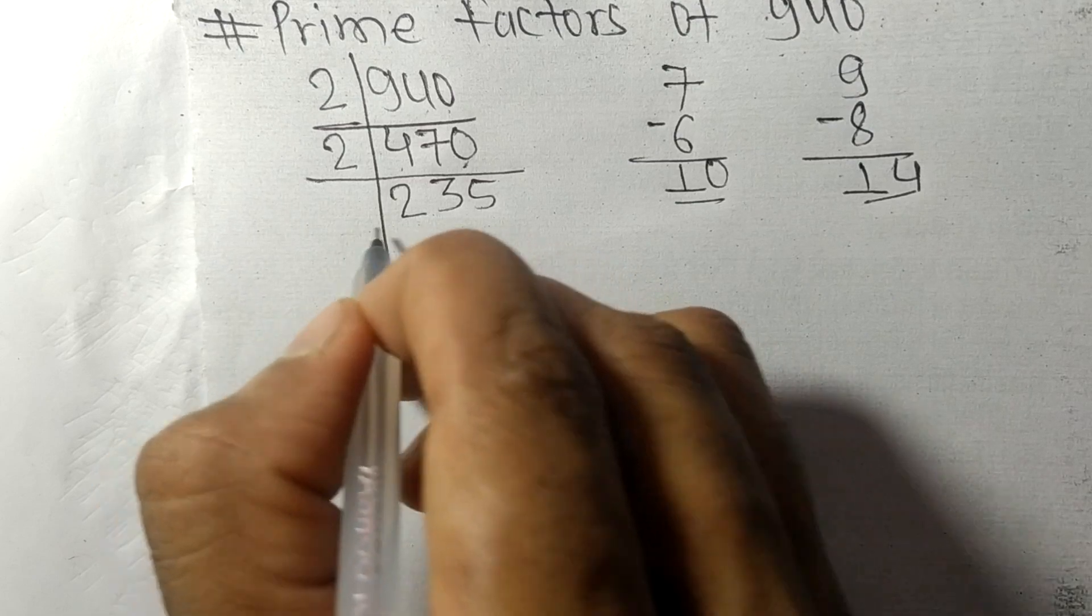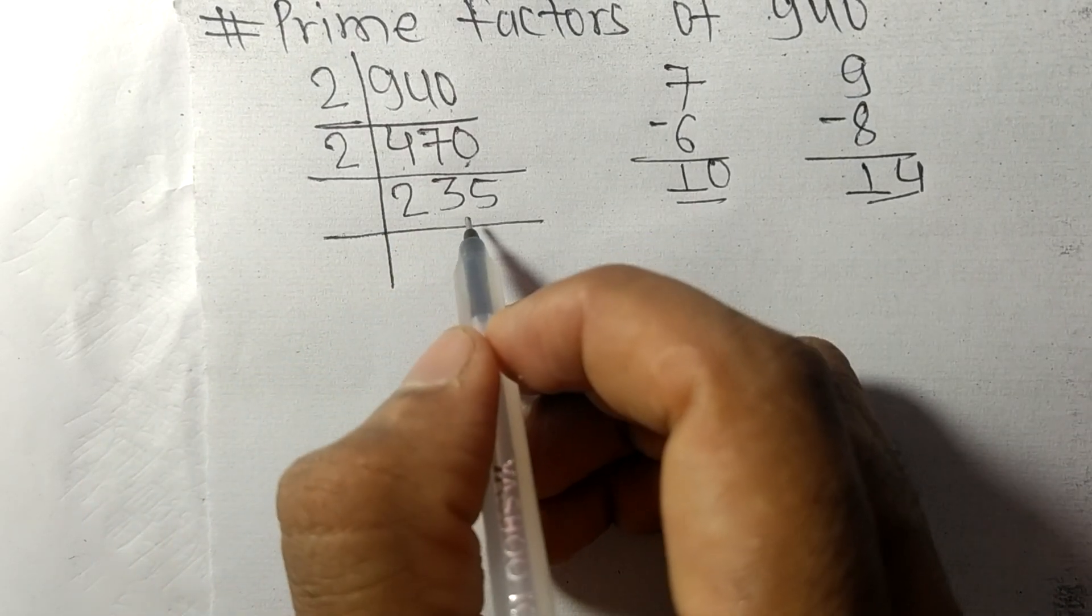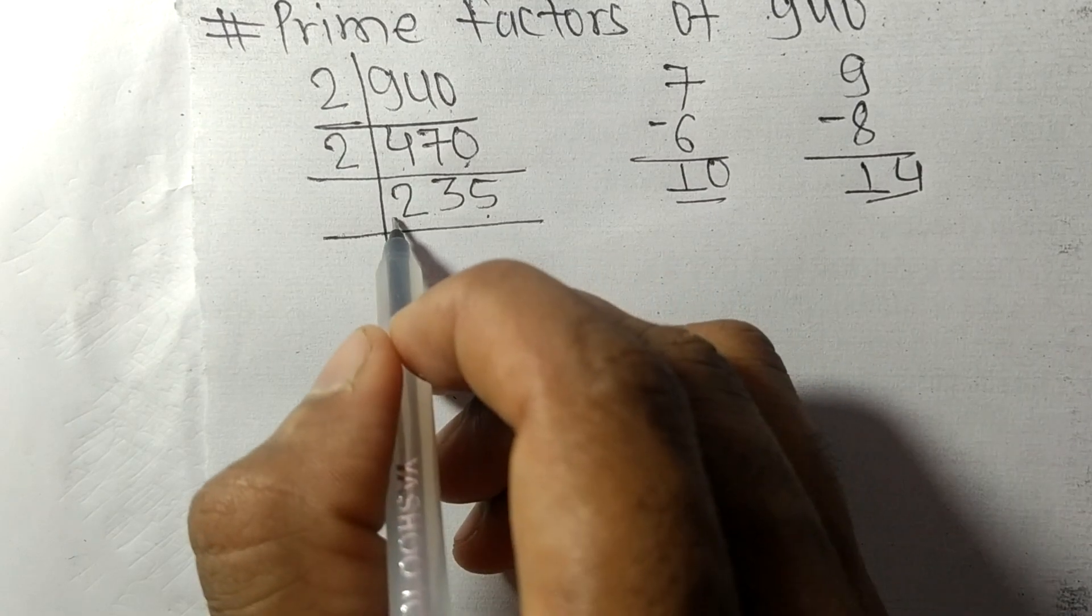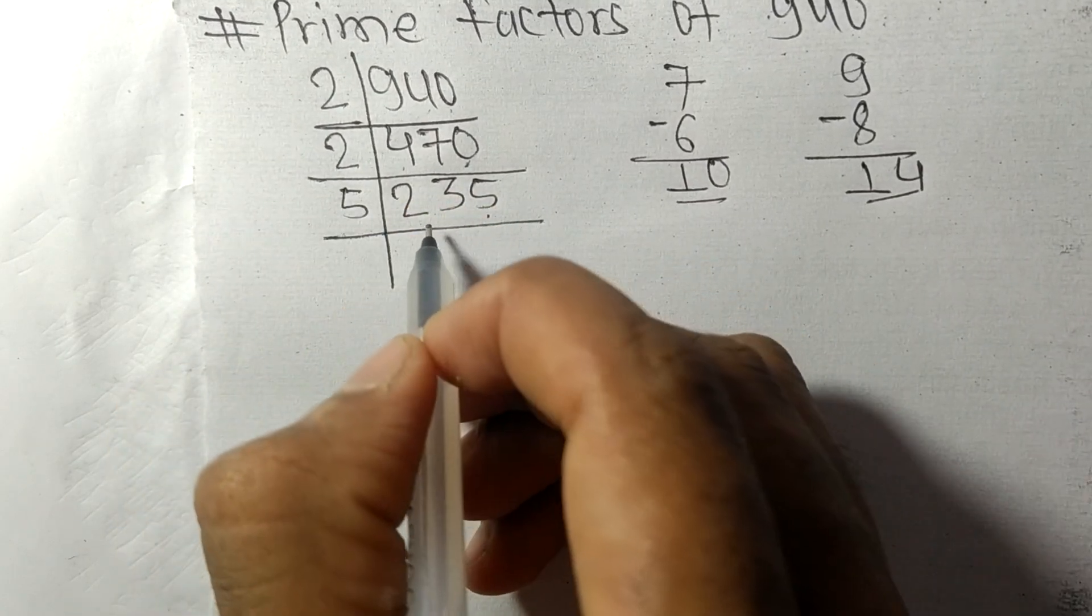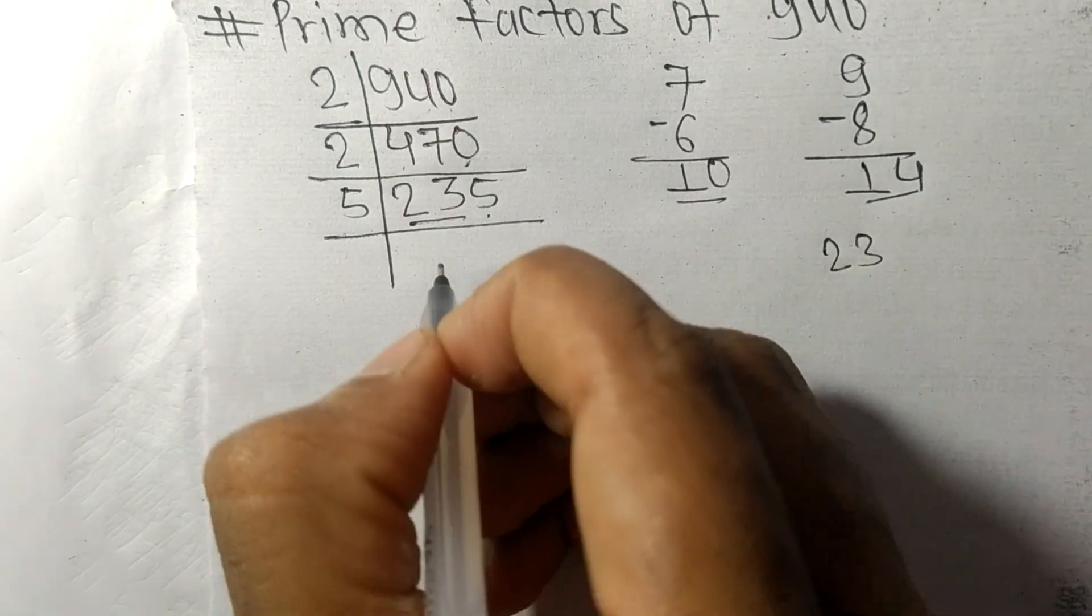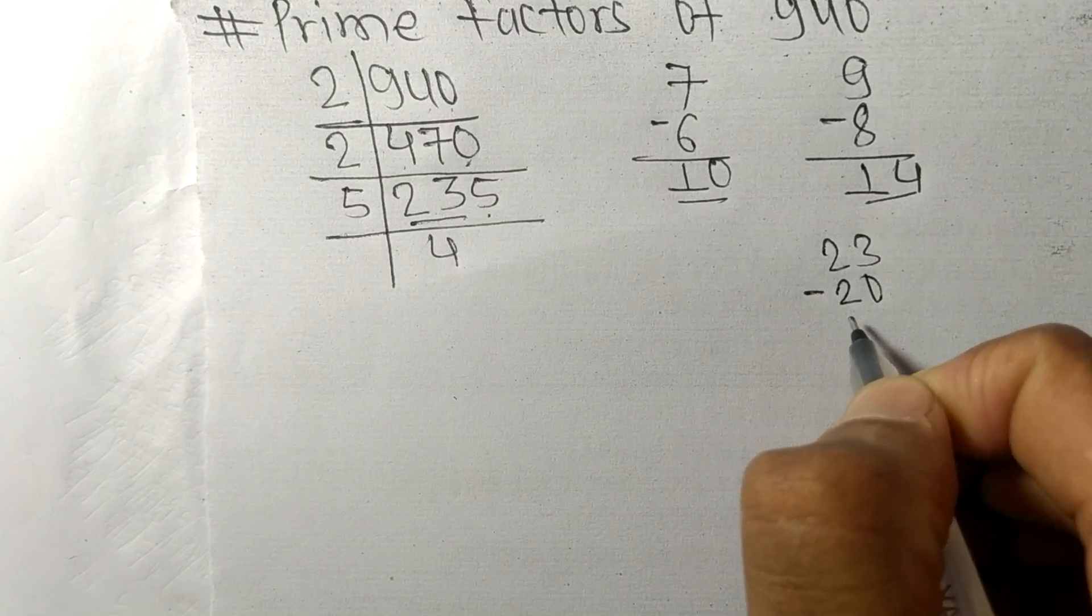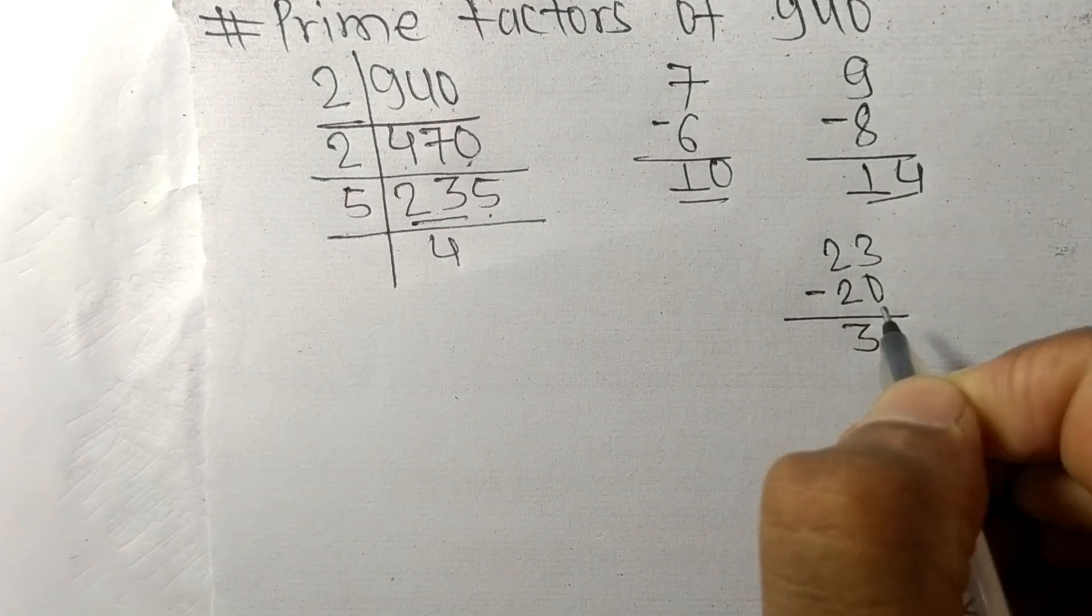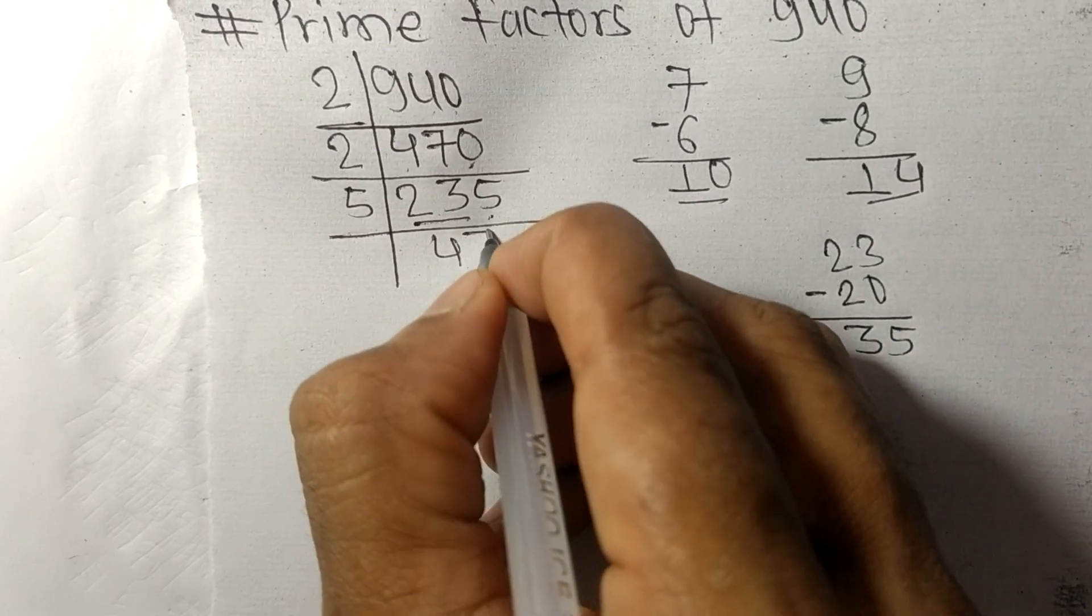So now we got 235. It contains 5 at the last so it is exactly divisible by 5. First we have 23, so 5 times 4 means 20. On subtracting we get 3, this 5, 35.